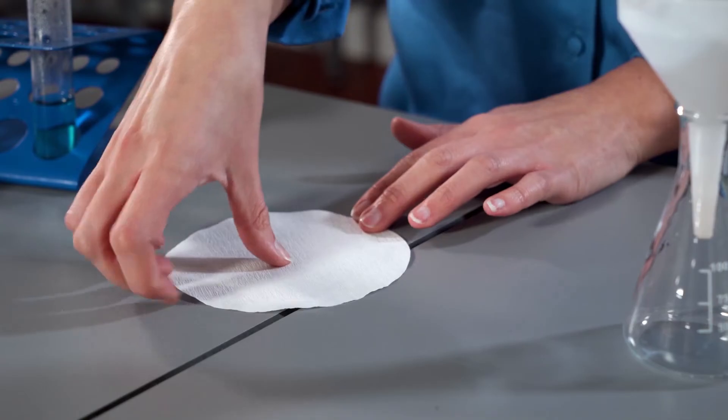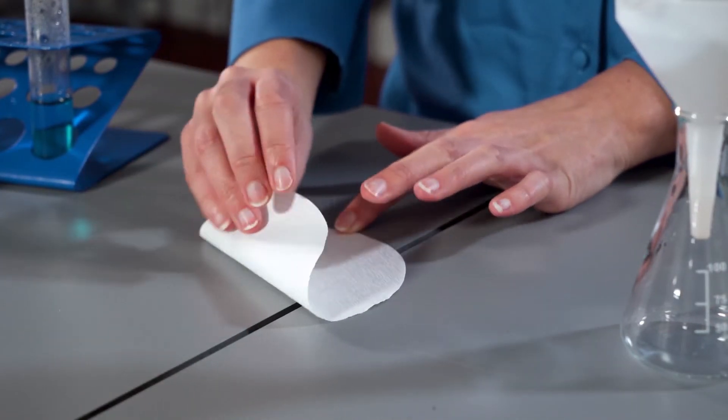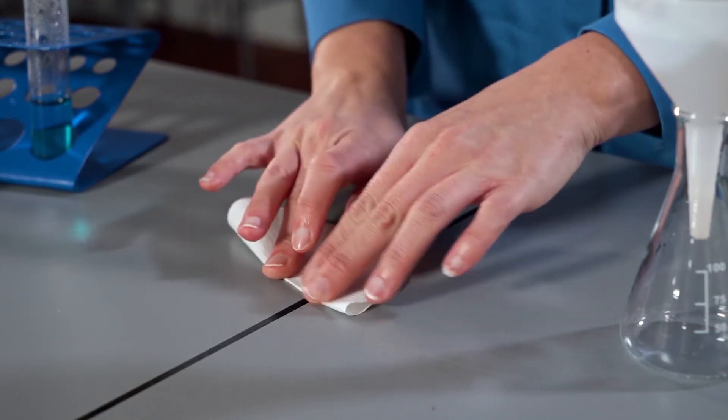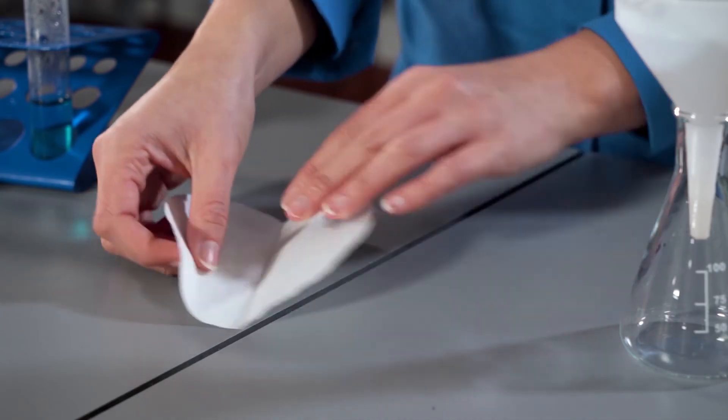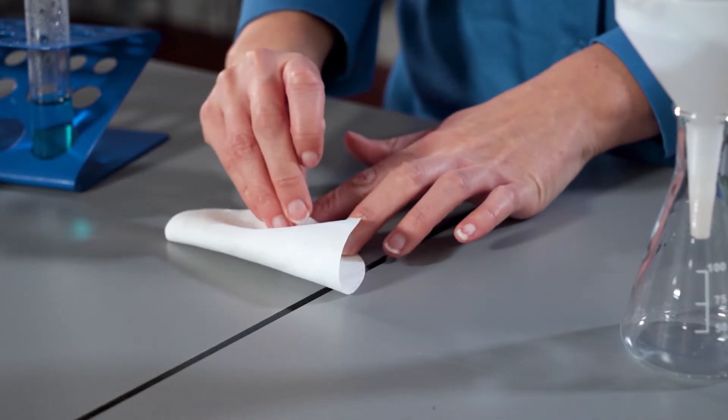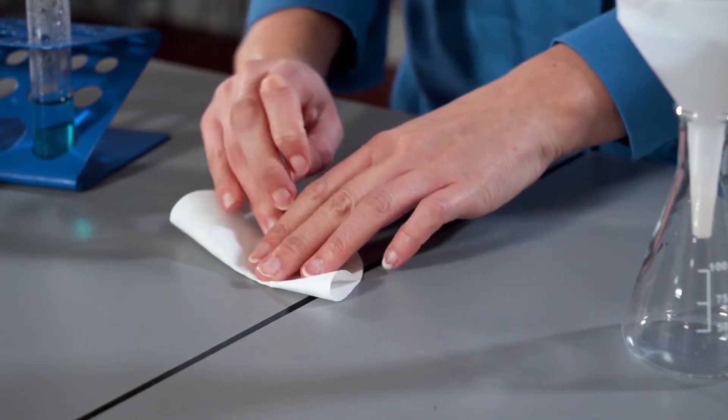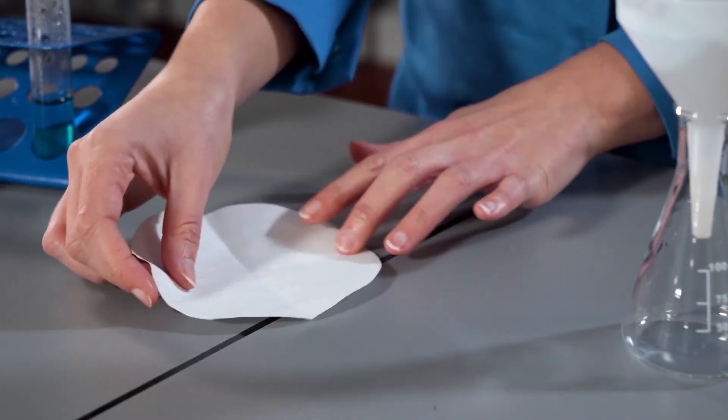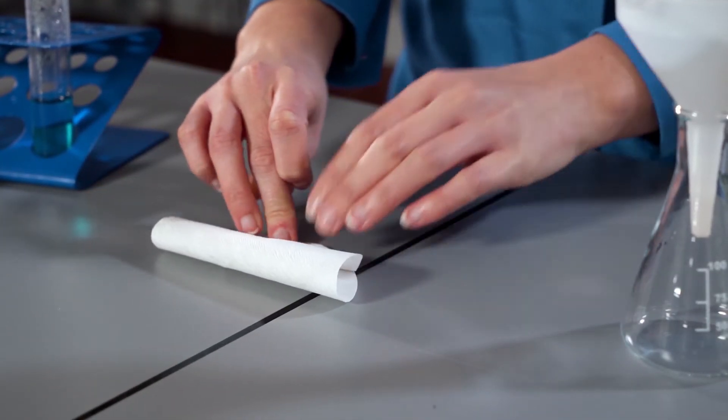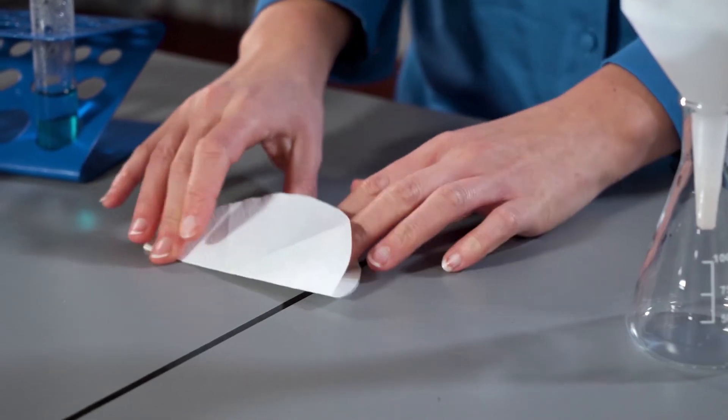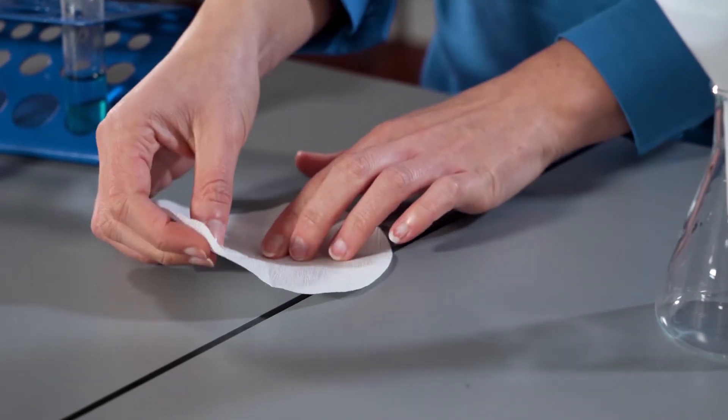To do this, we'll start by folding some filter paper in half, opening it up and folding it in half again, opening it up half again, and once more in half again.